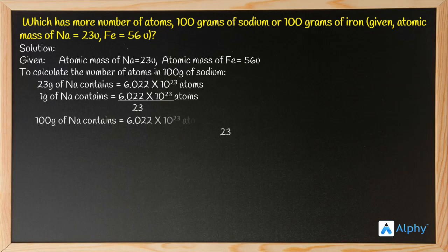For 100 grams of sodium: 6.022 × 10²³ atoms × 100 divided by 23, which gives 2.6182 × 10²⁴ atoms.